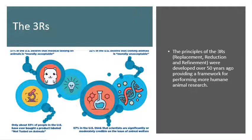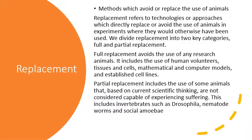There is a principle called the Three R's: replacement, reduction, and refinement, which should be applied in any animal research. The first is replacement — a method to avoid or replace the use of animals. This means we can use technology or another species that does not suffer as much.